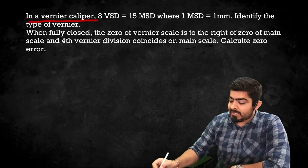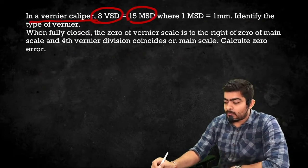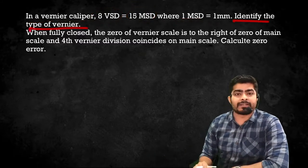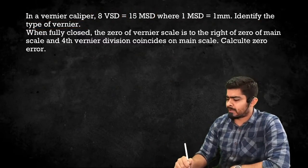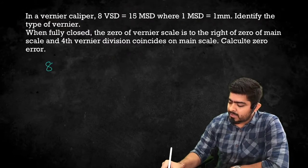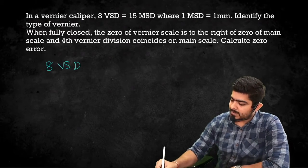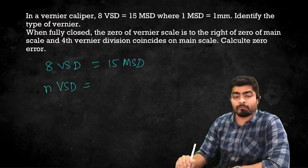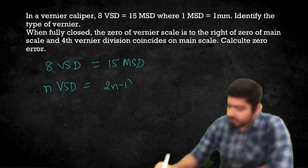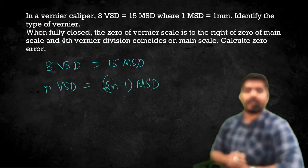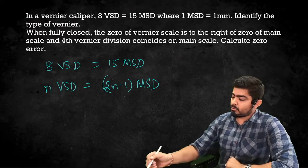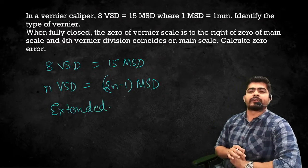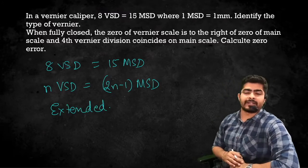Next problem: In a Vernier Caliper, 8 Vernier Scale Divisions are equal to 15 Main Scale Divisions, where 1 MSD = 1 mm. Identify the type of Vernier. Here 8 VSD = 15 MSD, which can be written as N VSD = (2N−1) MSD. This occurs in an Extended Vernier Caliper — the third type.